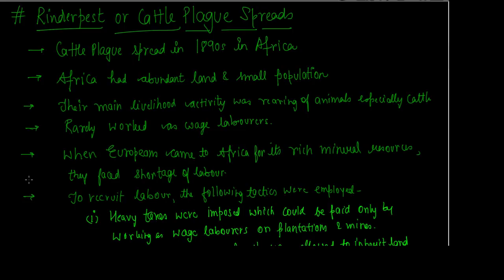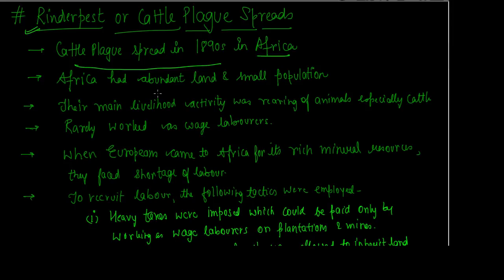The biggest problem that came from the colonial period in Africa was the cattle plague, which we call rinderpest. Cattle plague and rinderpest spread in the 1890s in Africa. Africa had abundant land, small population, and a lot of mineral resources.